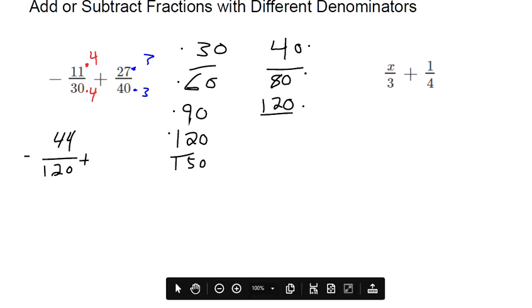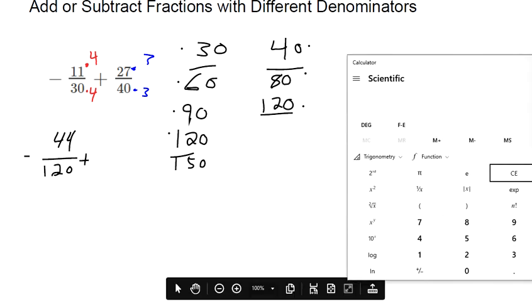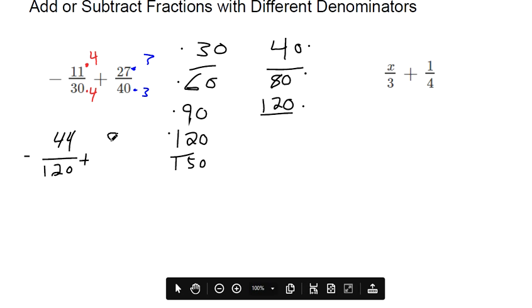And then 30 times 4 makes 120. And then over here, 27 times 3, I don't know off the top of my head, 81. And then 40 times 3 makes 120.